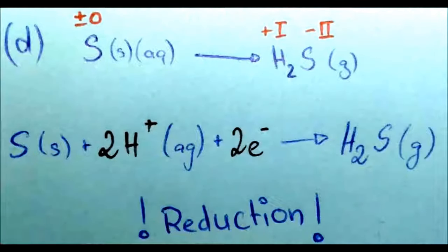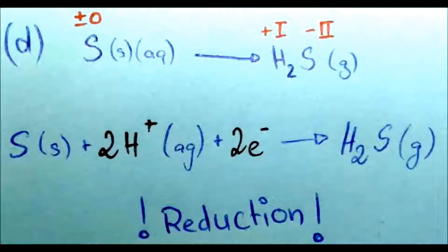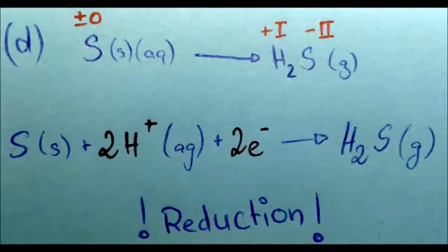In the next example we have elemental sulfur, which like iodine has an oxidation state of zero, and we reduce it to sulfide (H₂S / sulfuric acid). This is a reduction because sulfur goes from zero to minus two oxidation state, requiring two electrons and two hydrogen ions. The half reaction is: sulfur plus two hydrogen ions plus two electrons reacts to give sulfide.